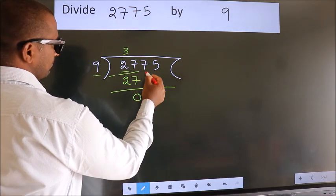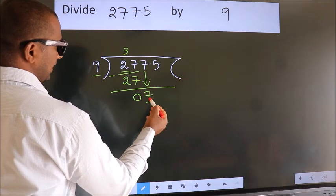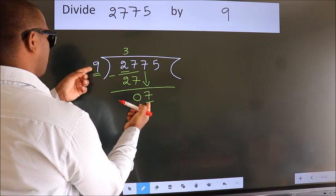After this, bring down the beside number. So 7 down. Here we have 7. Here 9. 7 smaller than 9.